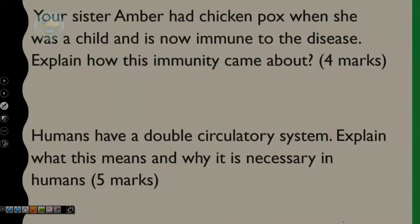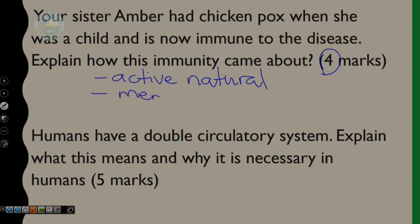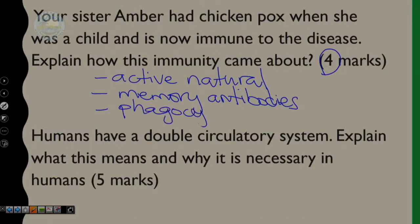Your sister Amber had chicken pox when she was a child and is now immune to the disease. Explain how this immunity came about — for four marks. You must mention active natural immunity. You must talk about memory antibodies, which would have been created after the original antibodies dealt with the infection. And you must talk about the phagocytes which would deal with the chicken pox after your body would have created antibodies. These memory antibodies are going to give her permanent immunity against chicken pox in the future. Explain yourself well and you'll get your full four marks.